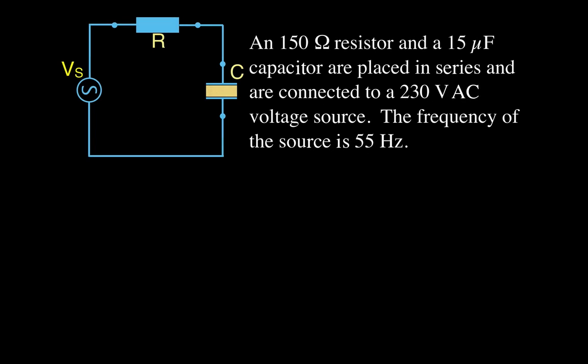In today's video, I'm going to be going over AC power for RC circuits. We have a 150 ohm resistor and a 15 microfarad capacitor placed in series, connected to a 250 volt AC voltage source with a frequency of 55 hertz.